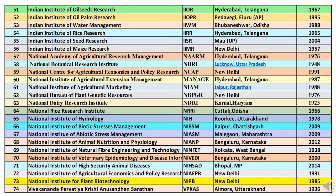Next is NDRI — National Dairy Research Institute — headquartered at Karnal, Haryana, established in 1923. Next is NRRI — National Rice Research Institute — headquartered at Cuttack, Odisha, established in 1966. Next is NIH — National Institute of Hydrology — headquartered at Roorkee, Uttarakhand, initiated in 1978. Next is NIBSM — National Institute of Biotic Stress Management — headquartered at Raipur, Chhattisgarh, started functioning in 2009.